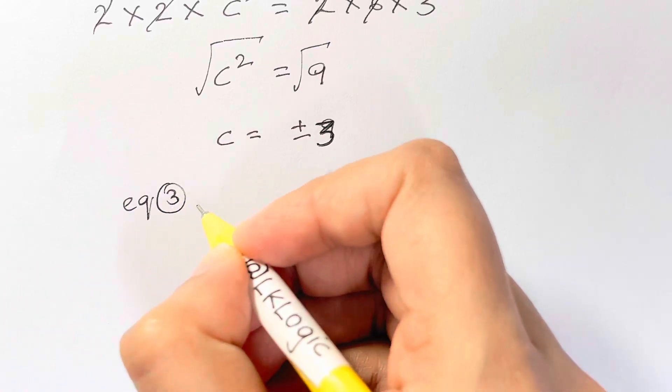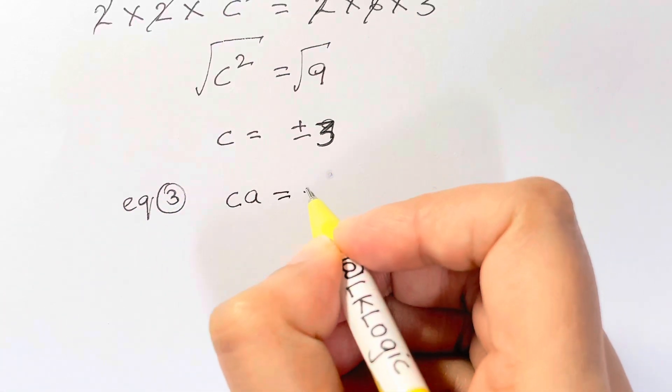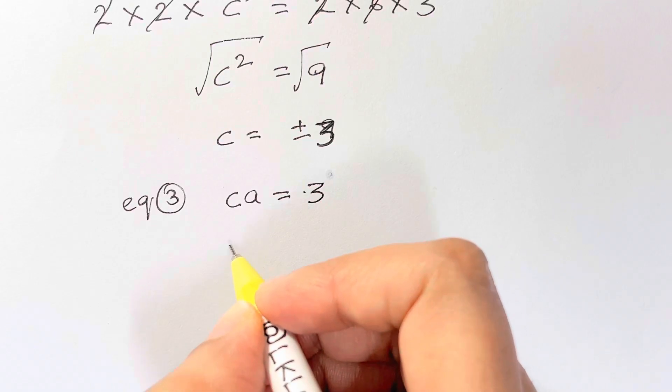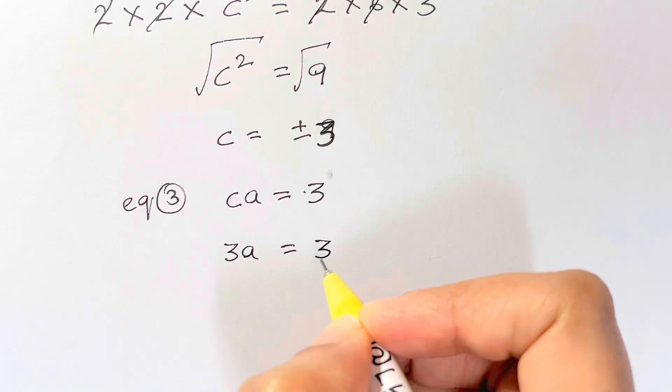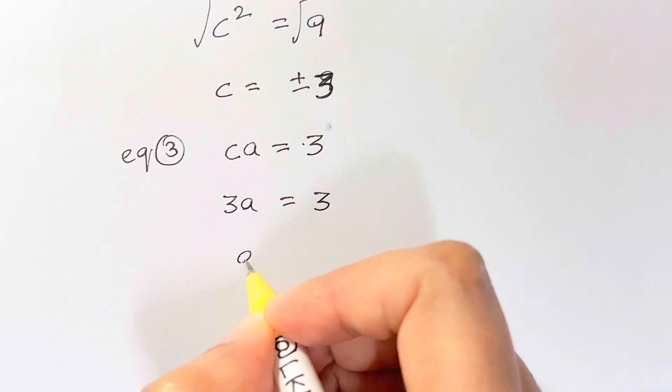From equation 3, we have CA equals to 3. So let's substitute the value of C as 3 in that. So 3A equals 3. A is equal to 3 over 3, that's plus or minus 1.